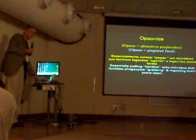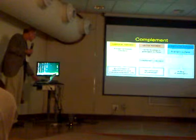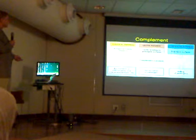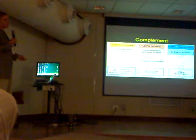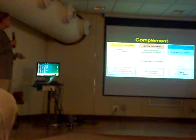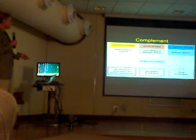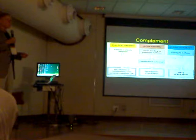The second thing that can be engaged is complement. Collectins can activate complement, which is a series of preformed proteins present in the serum. The complement pathway can be activated when it detects a collectin bound to a pathogen surface — that's one of three important triggers. This pathway can also be triggered by antibody bound to something, or by the microbial surface itself. It involves a series of proteases that activate structural components.